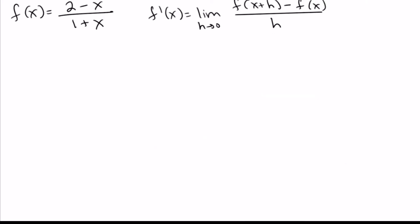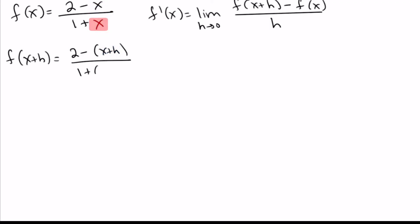Just like last time, we're going to start by figuring out f of x plus h, which means taking any x's you see and replacing them with x plus h. Using parentheses helps avoid mistakes with signs. We distribute that negative sign and do a little cleanup. On the bottom, we just have what we had before.